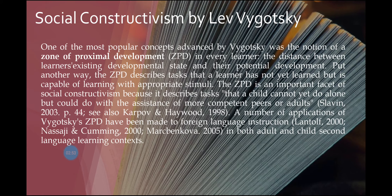One of the most popular concepts advanced by Vygotsky was the notion of the Zone of Proximal Development, or ZPD. The ZPD is the distance between a learner's existing developmental state and their potential development. Put another way, the ZPD describes tasks that a learner has not yet learned but is capable of learning with appropriate stimuli. It is an important facet of social constructivism because it describes a task that a child cannot yet do alone but could do with the assistance of more competent peers or adults. A number of applications of Vygotsky's ZPD have been made to foreign language acquisition in both adult and child second language learning contexts.